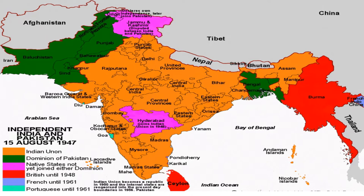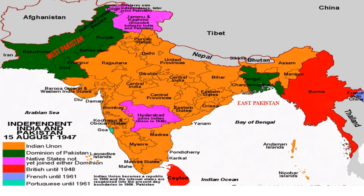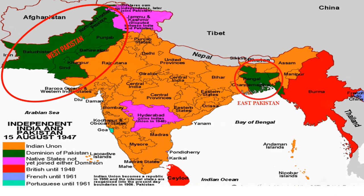The western zone was popularly termed West Pakistan and the eastern zone was initially termed East Bengal and later East Pakistan. Now look at this map carefully — how can a country be governed where there is no land connection between two parts of the country, with India in between, which Pakistan considers as its enemy? They were totally different from each other, from culture to food to language, except for religion, and this language difference became the foremost reason for independence.